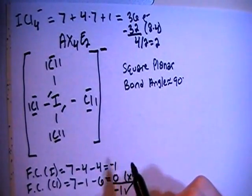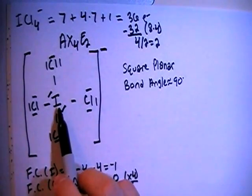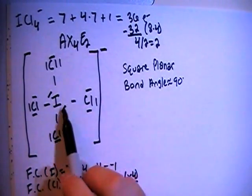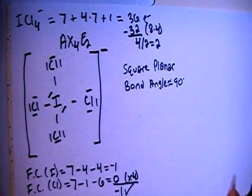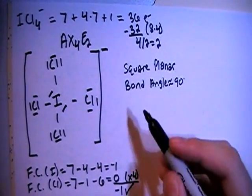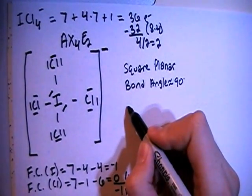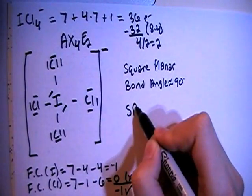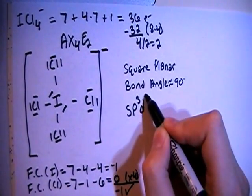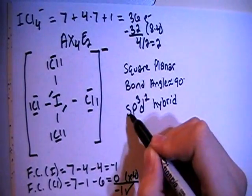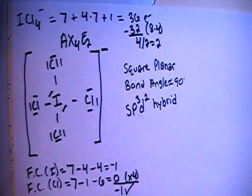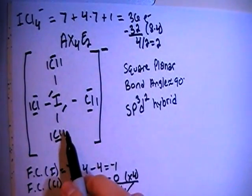In terms of hybridization, looking at the central iodine, there's 1, 2, 3, 4, 5, 6 electron groups or potential bonding sites. So that means we need 6 hybrid orbitals. So we're going to go with SP3D2 hybrid. Because there's 1S, 3Ps, 2Ds for a total of 6, which matches the 6 electron groups.